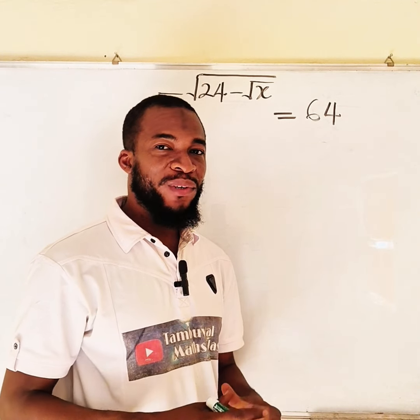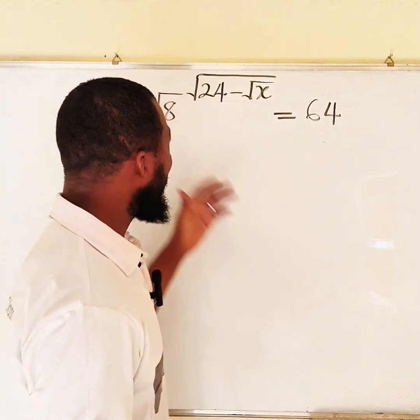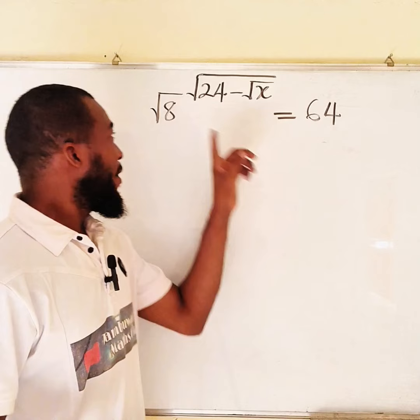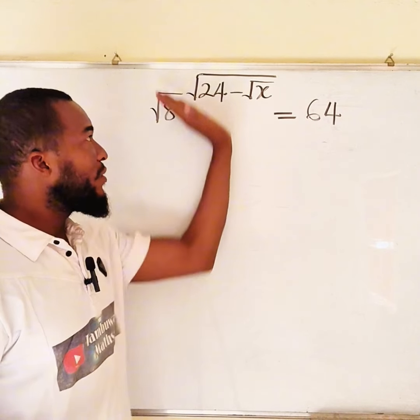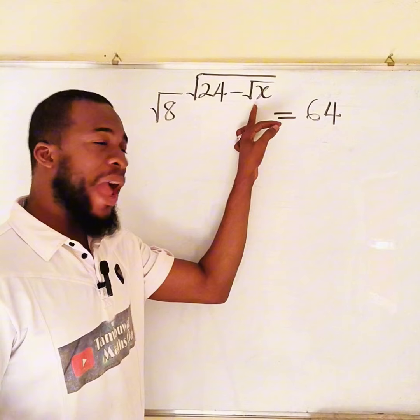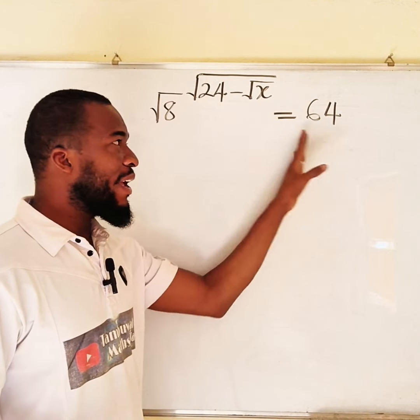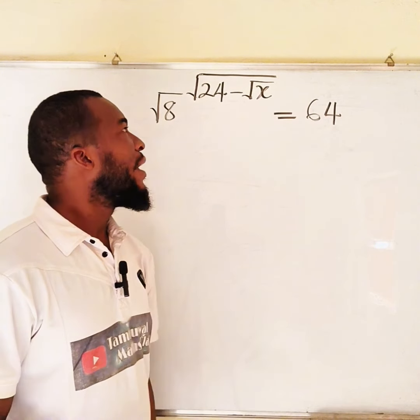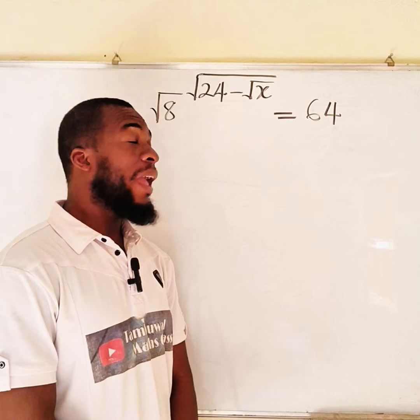Hello everyone. In this tutorial, we are going to find a solution to this interesting problem. The square root of 8 raised to the power of the square root of 24 minus square root of x, and everything here is equal to 64. And how can we find this x?